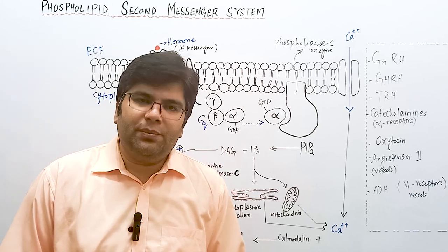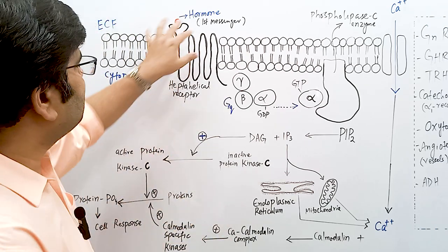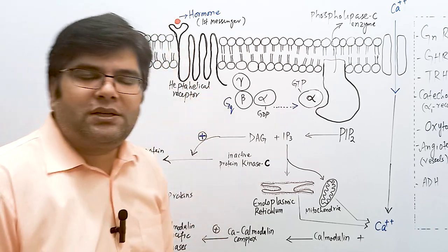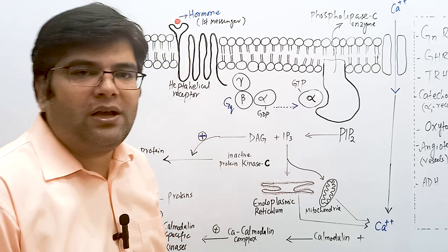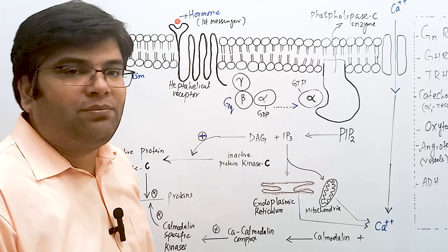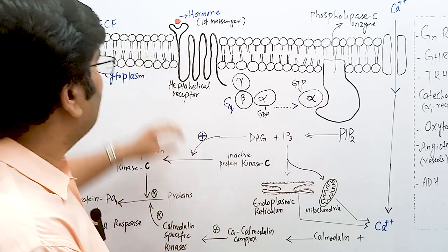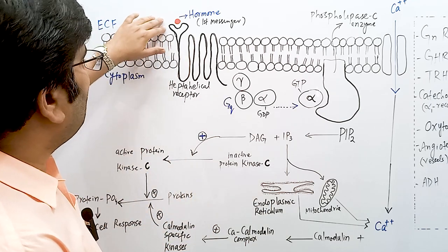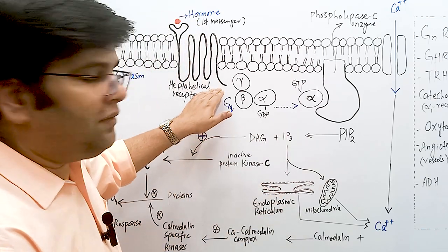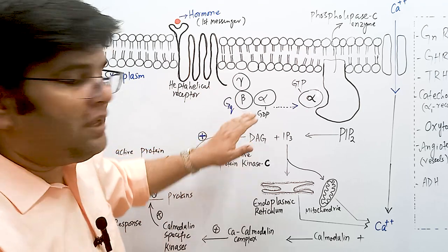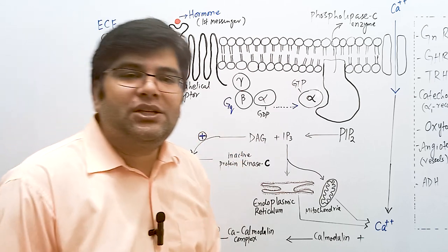In the phospholipid second messenger system, when the hormone — which is the first messenger — binds to its receptor, this receptor is a serpentine receptor, meaning it has the shape like the body of a snake. It is also called a heptahelical receptor because it passes through the membrane seven times, so we also call it a seven-pass receptor. The internal tail of this receptor is associated with the G protein, which is called GQ protein.